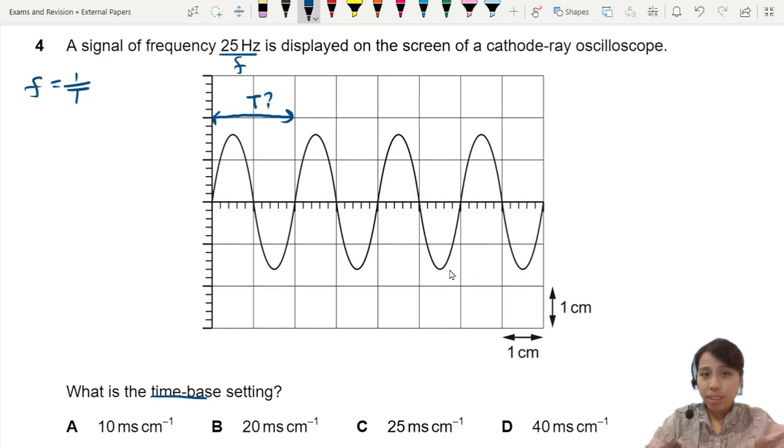Frequency is 1 over T, so T is 1 over F. We can take this as 1 divided by 25. What's the period? Take the calculator and press. The period should be 0.04 seconds.